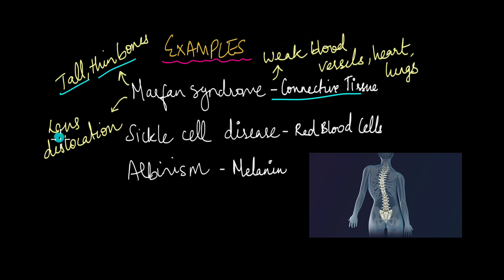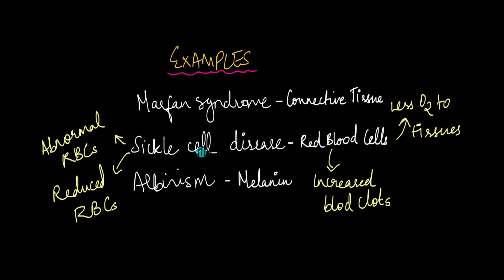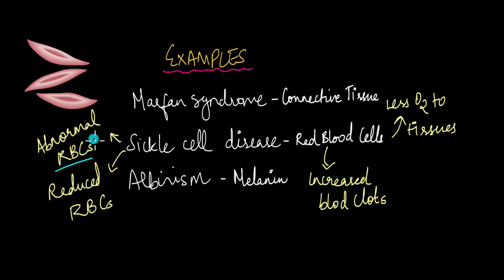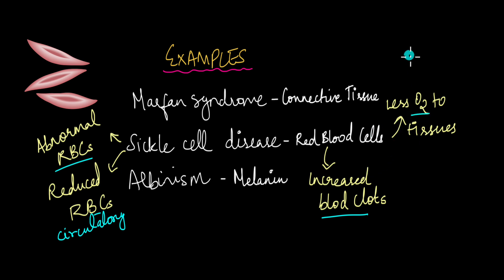Marfan syndrome also causes a discoloration in the lens, because the lens is also held in place with the help of connective tissues, affecting the lens and vision as well. Sickle cell disease is caused by a mutation in the gene that codes for the hemoglobin protein. This mutation causes RBCs to take up an abnormal sickle shape, leading to abnormal RBCs and affecting the circulatory system. These RBCs are more prone to clumping together, increasing the risk of blood clots, which reduces oxygen delivery to tissues and can cause tissue death and many other problems.